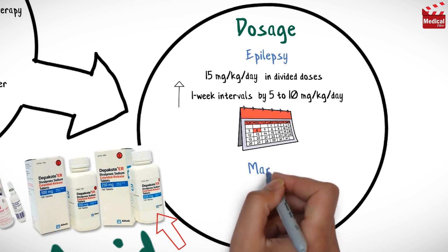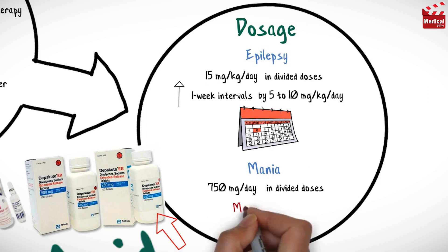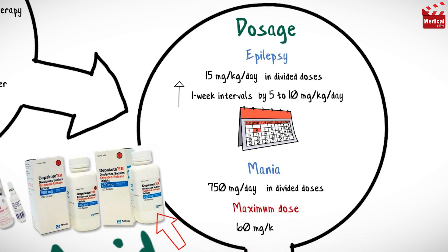For mania, the usual dose of divalproex sodium is 750 mg per day in divided doses, and the maximum dose is 60 mg per kg per day.